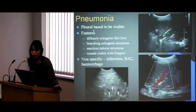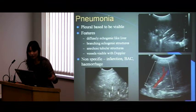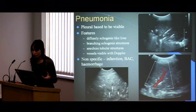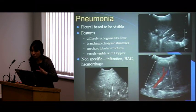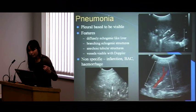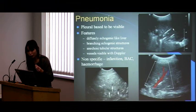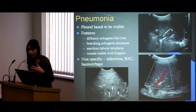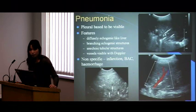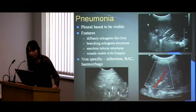For infection within the lung parenchyma, remember: the pathology has to be pleura-based to be visible — if there's any air in between, you can't see anything. Consolidated lung can look a bit like the liver, which is why some people call it hepatization of the lungs. In a picture of consolidated lung you can see bright linear echogenic lines — those are your bronchioles filled with air.